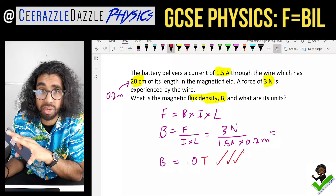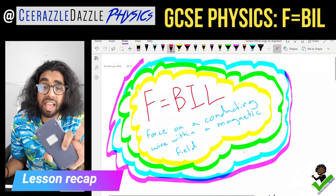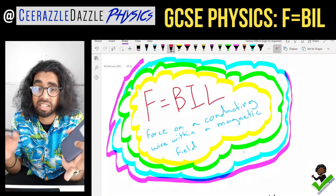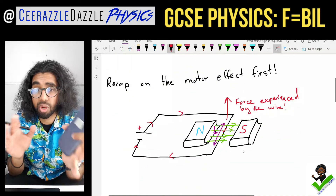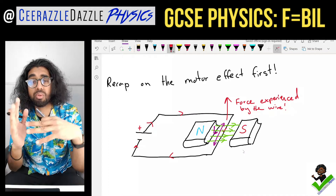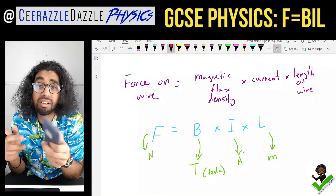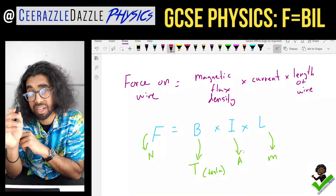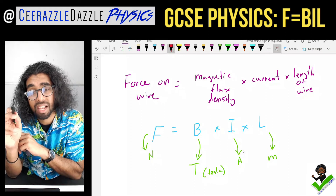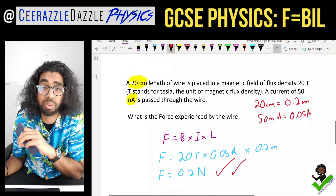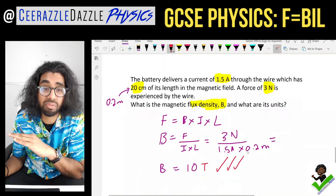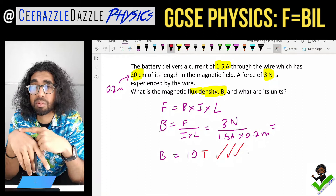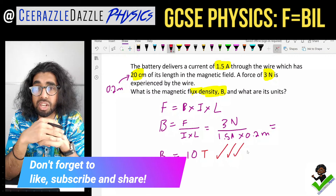That's it for today's session. Quick recap: today's topic was F = BIL — calculating the force on a conducting wire within a magnetic field. When current passes through a wire perpendicular to a field, it experiences a force. Force is in Newtons, magnetic flux density is in Tesla, current is in amps, and length is in meters. We did two examples — calculating force and calculating magnetic flux density B. Make sure you like and subscribe. Hope you enjoyed the lesson — goodbye and good luck!